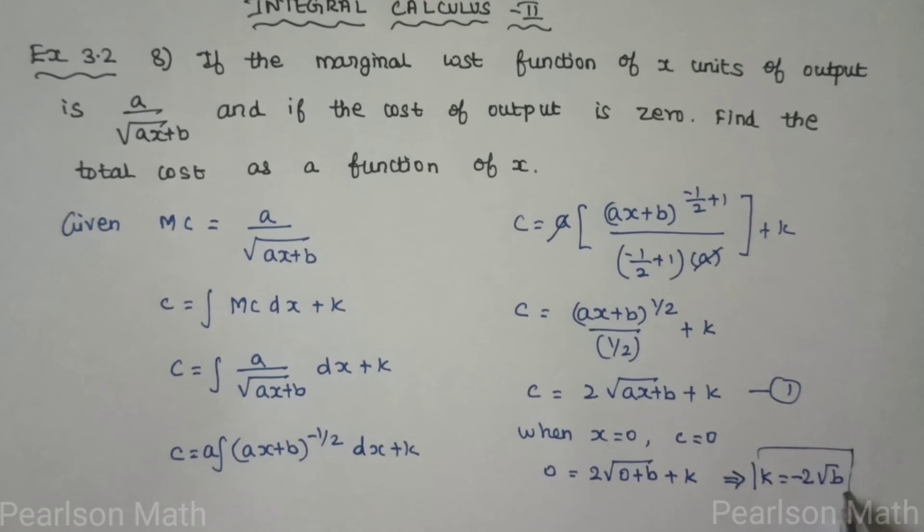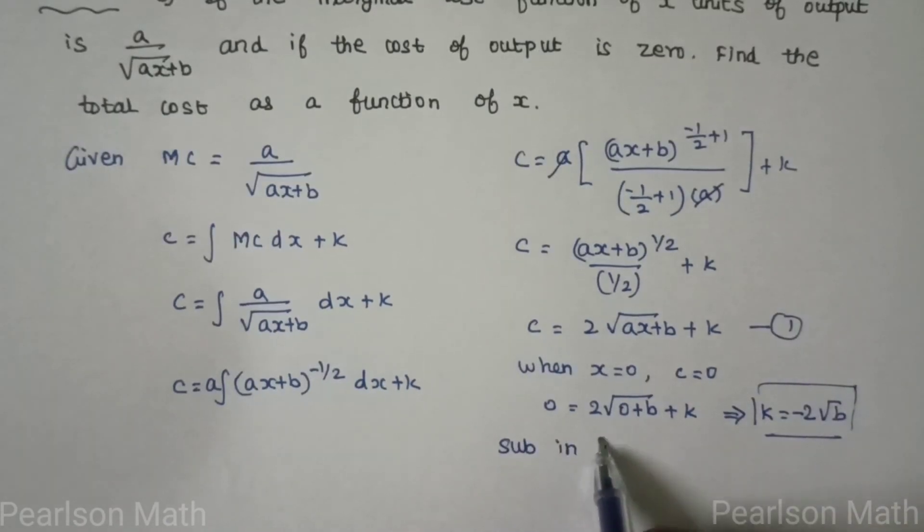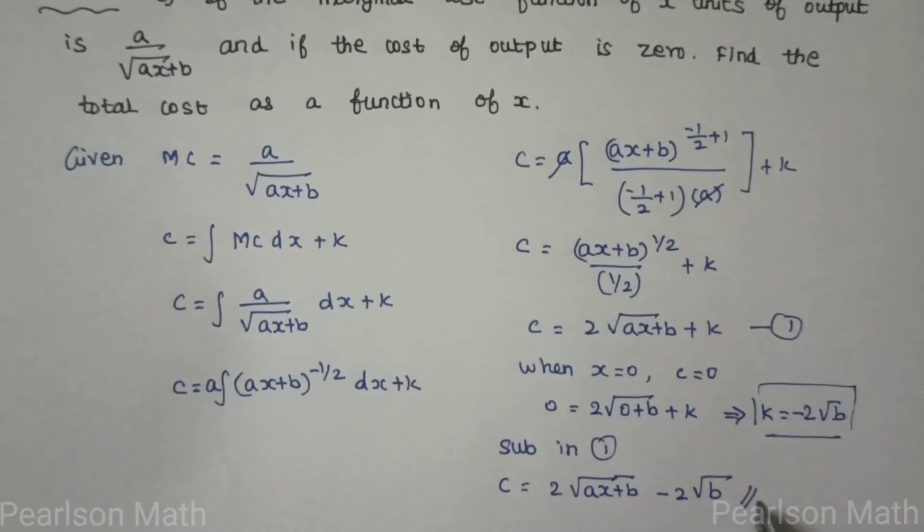Now, the first equation substitute in equation 1. C is equal to 2 root of ax plus b, k value is minus 2 root b. So that is it. It is the total cost function.